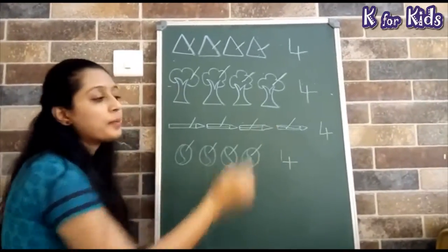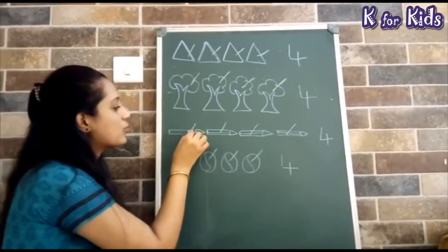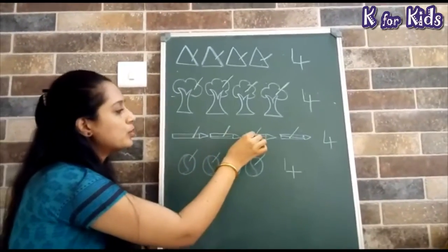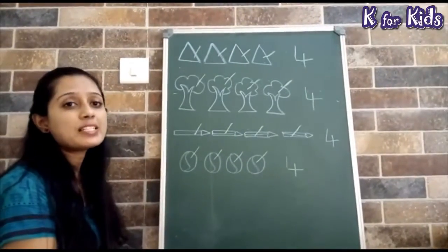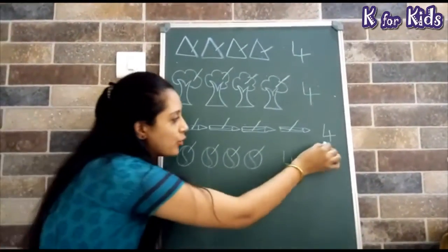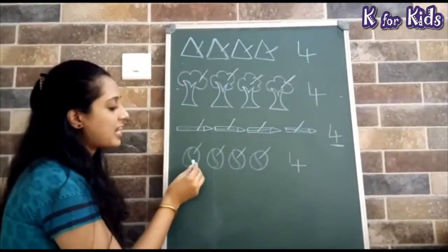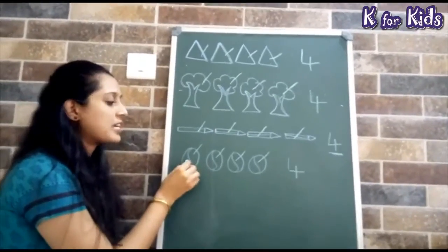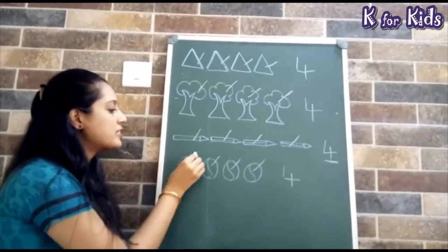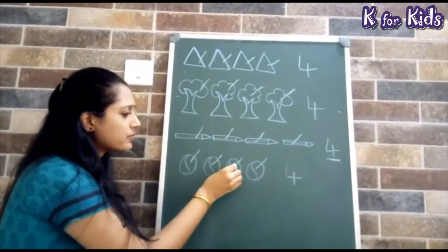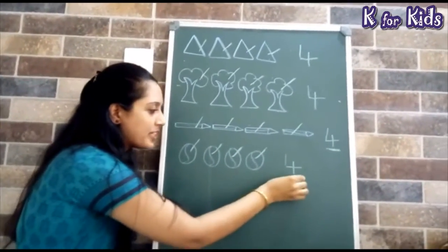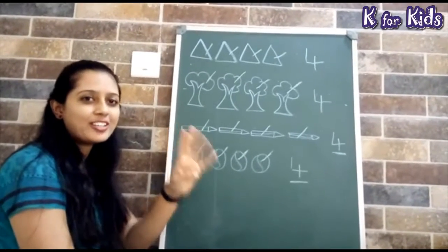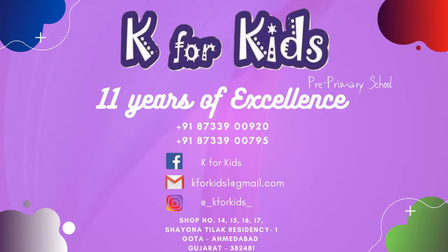Next, what do we have? Pencils. Let's work: 1, 2, 3 and 4. So how many pencils do we have? 4. Then next, what do we have? Ball. So count: 1, 2, 3 and 4. So how many balls are there? 4 balls.